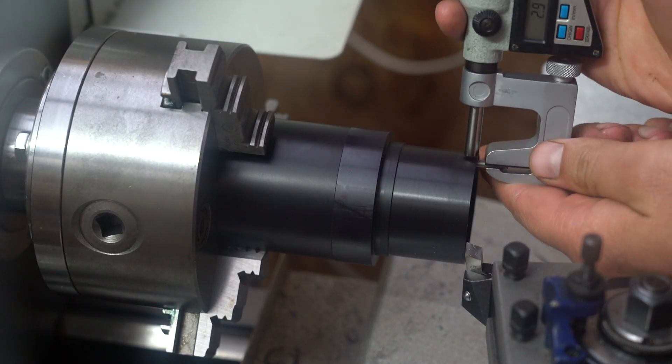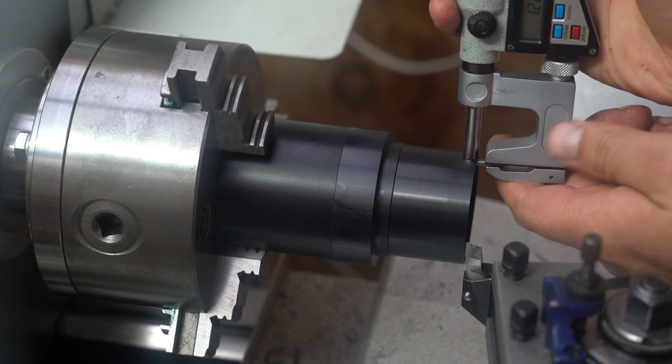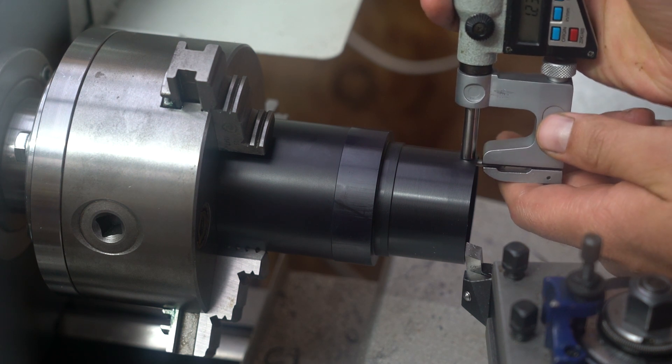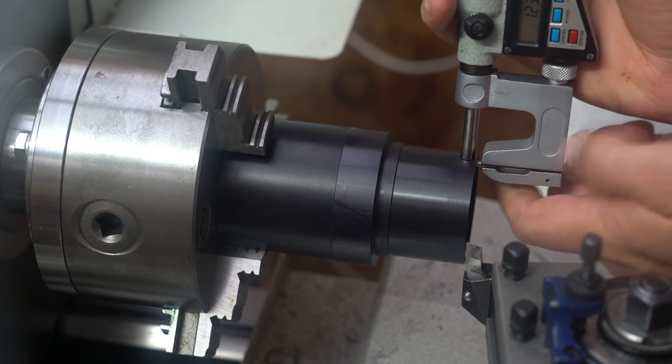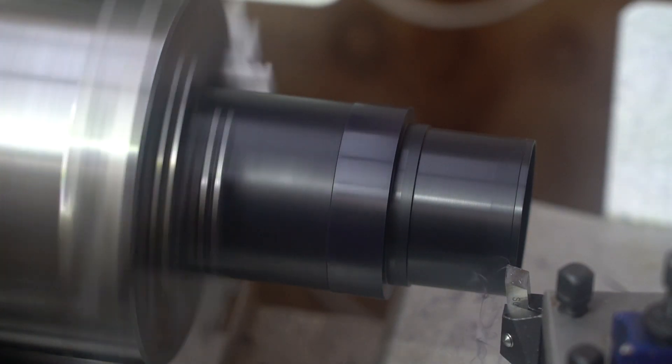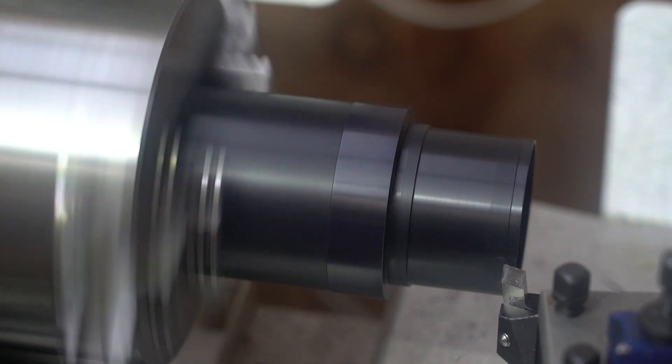Now you'll notice here that I'm using a special wall thickness micrometer, as using a standard micrometer or calipers can actually deform the part when it's so thin and give you a false measurement.